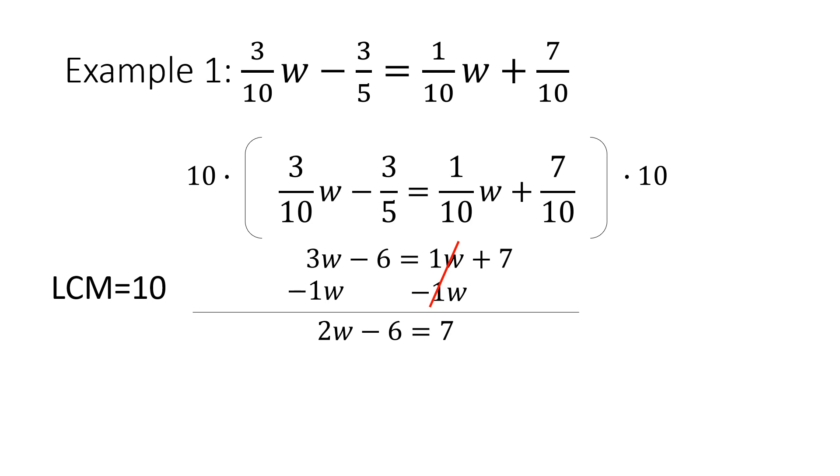Now I need to move my -6, so I'm going to add 6 on both sides. My 6 on the left is going to cancel out, leaving me with 2W = 13 because 7 + 6 is 13.